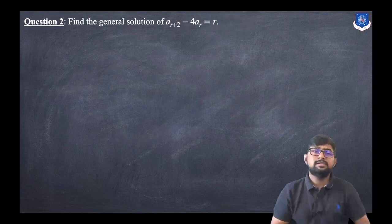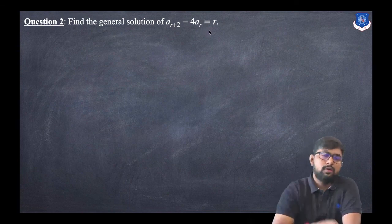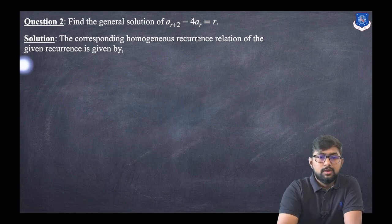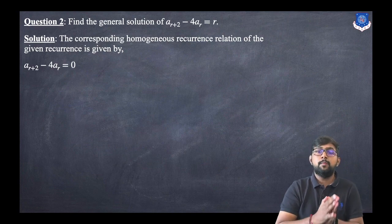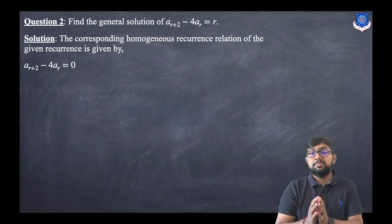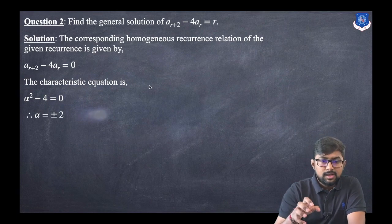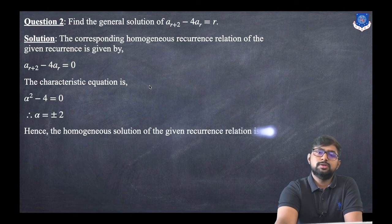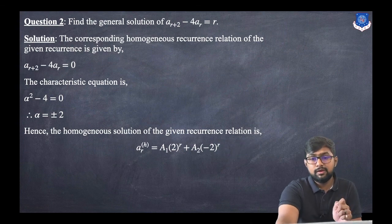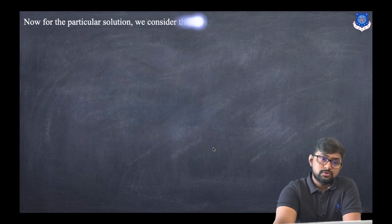Let us discuss a second example: find the general solution of a(r+2) − 4·a(r) = r. Since the right-hand side is not equal to zero, it is a non-homogeneous equation. The homogeneous equation is a(r+2) − 4·a(r) = 0. The order is 2, so the characteristic equation is α² − 4 = 0, giving α = ±2. Since the roots are distinct, a(r)_h = a1·2^r + a2·(−2)^r.